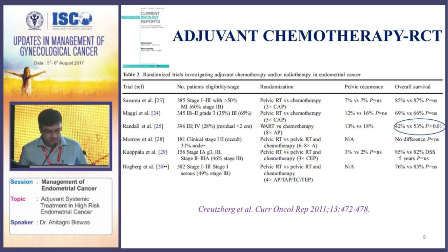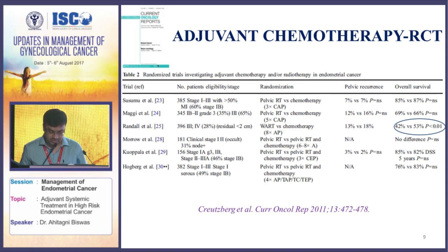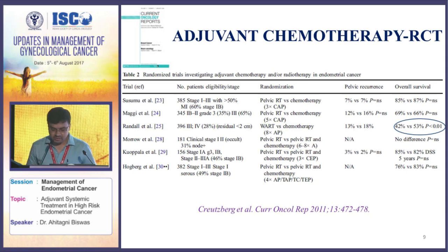This is a tabular representation of trials looking at adjuvant chemotherapy in patients with endometrial cancer. These trials have been done from Japan, Europe, and the United States. Most of the trials have failed to demonstrate any significant benefit in pelvic recurrence or overall survival improvement with the addition of adjuvant chemotherapy, with the exception of one trial published by Randall and associates, where they demonstrated an overall survival benefit — an absolute benefit of 11 percent at five years with a statistically significant p-value. Most study designs compared pelvic radiotherapy versus chemotherapy, or pelvic radiotherapy versus a combination of pelvic radiotherapy and adjuvant chemotherapy.